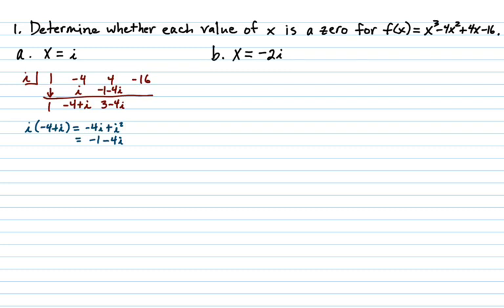So next step is to multiply. We've got to multiply i times 3 minus 4i. So again, I'll do this work down below. You get 3i minus 4i squared. But remember, i squared is negative 1. So negative 4 times negative 1, that's 4. We'll get 4 plus 3i. And then when we add 16, we're going to get negative 12 plus 3i. So we didn't get a remainder of 0, so the answer here is no.